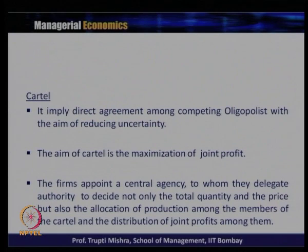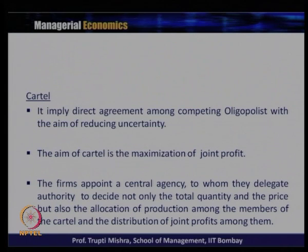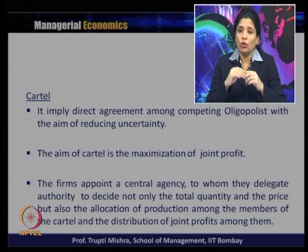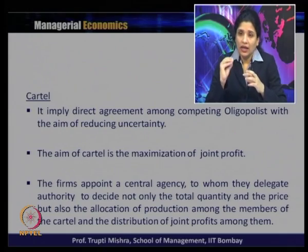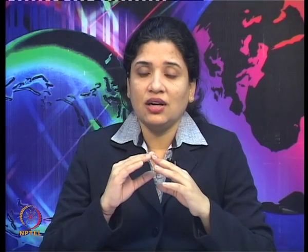A cartel is a direct agreement among competing oligopolists with the aim of reducing uncertainty. The optimization problem is to reduce uncertainty; the aim is to maximize joint profit. They function by appointing a central agency to which they delegate authority to decide not only the total output and price, but also the allocation of production among members and the distribution of joint profit.